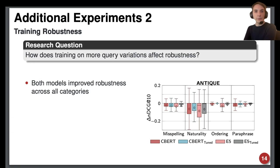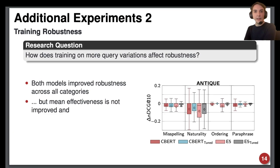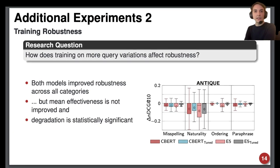Our results show that both models improved robustness across all categories, except CharacterBERT which got slightly less robust on misspelling, which may be expected. Interestingly, mean effectiveness on the variants is not improved, however, and effectiveness degradation is still statistically significant.